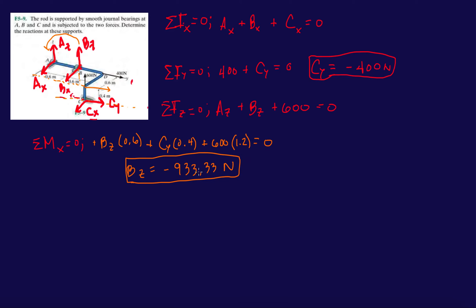Now that we have BZ, we can go back to the force equation in the Z direction. AZ equals 933.33 minus 600, which gives us AZ equals 333.33 newtons. Since this is positive, we assumed the correct direction for AZ.